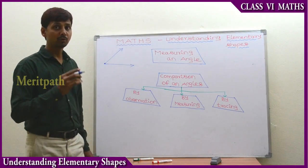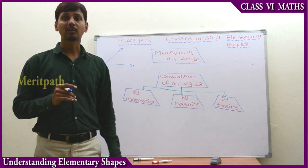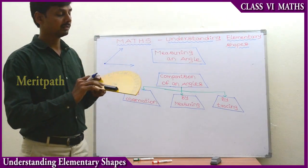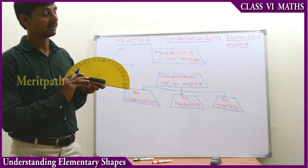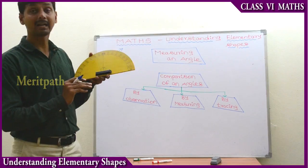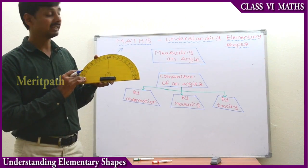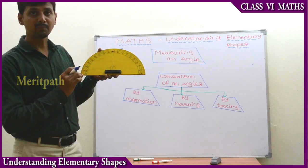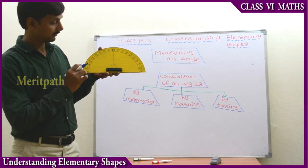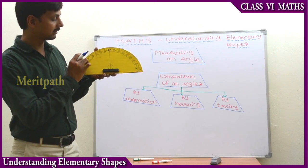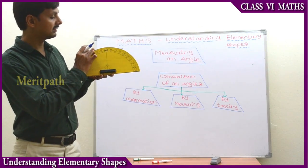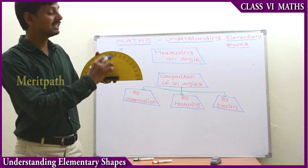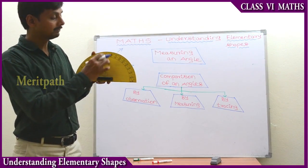We use a protractor to measure an angle. This is called a protractor - we have 180 degrees. It starts from here: 0, 10, 20, 30, 40, 50, 60, 70, 80, 90. This is called 90 degrees, a particular point.